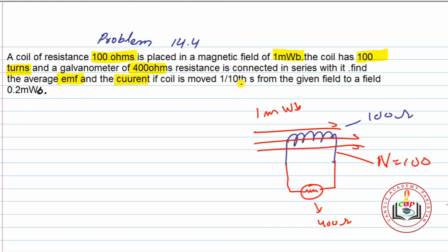ایک second کے دسویں حصے میں اس coil کو اس جگہ سے اٹھا کے — جہاں magnetic flux 1 milliweber تھا — اس سے ہٹا کر 0.2 milliweber والی جگہ پہ لے کے جایا گیا ہے۔ تو induced EMF کیا ہوگی اور current اس کے اندر سے کیا flow ہوگا — یہ find کرنا ہے۔